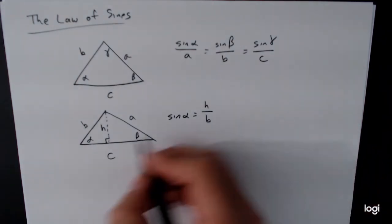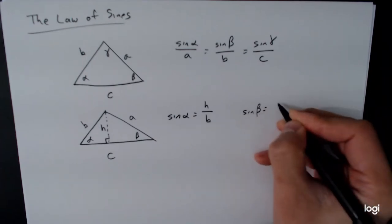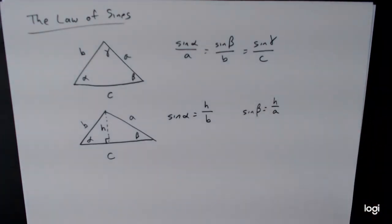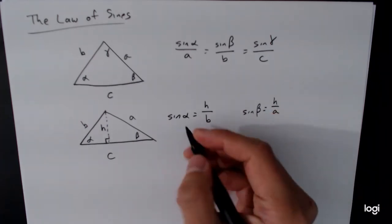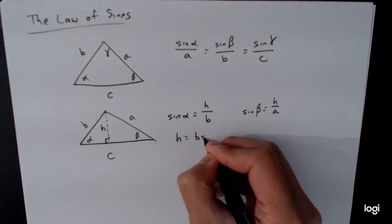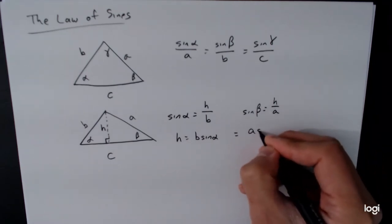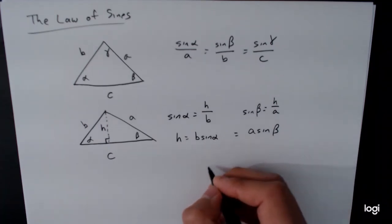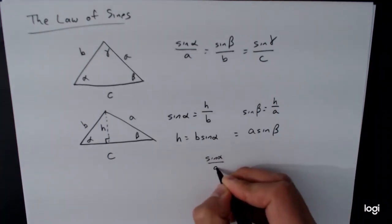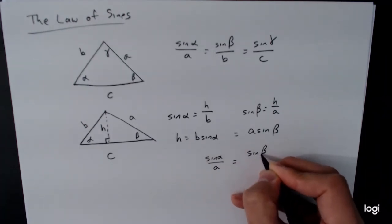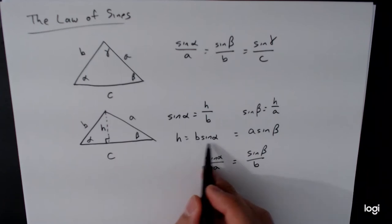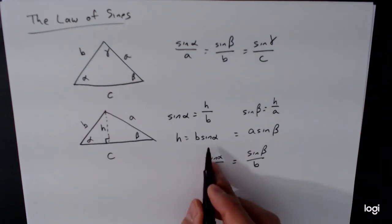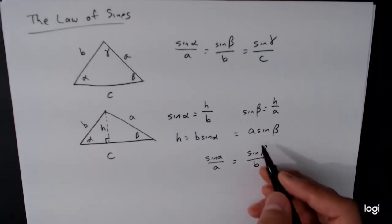Over on this side, we're going to have sine of beta equals h over a. And you'll notice that both of these have an h in it, so we can solve for the h. h is equal to b sine of alpha, and it's equal to a sine of beta. And so if we just focus on this equation right here, we can divide both sides by a times b to get sine of alpha over a is equal to sine of beta over b. So again, taking this equation, divide both sides by b times a, so the b's would cancel out here, the a's would cancel out over here.